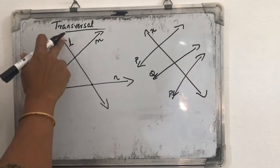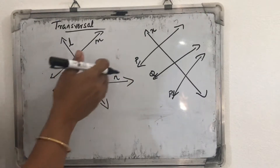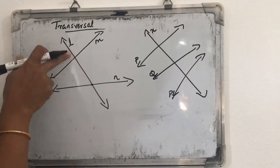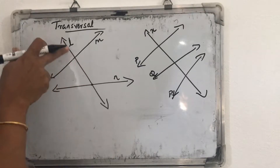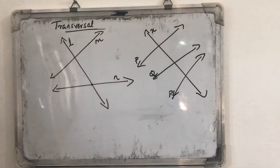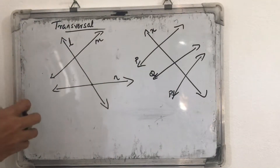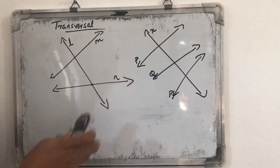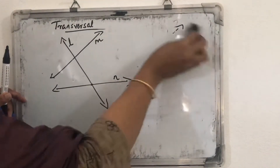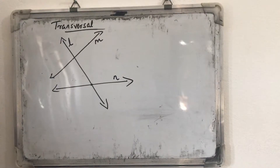So in this case, the transversal line is L, and lines M and N intersect at two points with L. Such type of lines are called transversal lines. And when two lines are cut by a transversal line L, different angles are formed, and there are special names for each of those angles. So first we want to discuss about those angles.